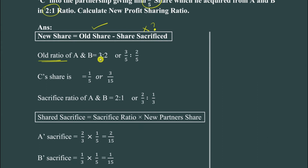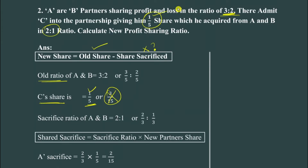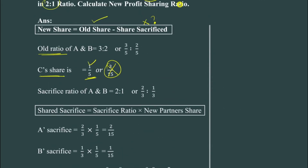The old ratio of A and B is equal to 3 to 2, meaning A has 3/5 and B has 2/5. C's share is 1/5. The sacrifice ratio between A and B is 2 by 3 and 1 by 3 respectively.